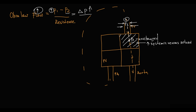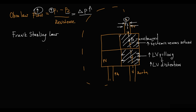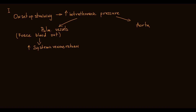Higher systemic venous return means more blood comes to the left ventricle, increasing left ventricular filling. With more blood in the left ventricle, it presses more on the ventricular walls, increasing left ventricular distension. According to Frank-Starling's law, higher left ventricular distension results in a greater force of contraction, so the left ventricle pushes more blood into the aorta — increasing stroke volume.